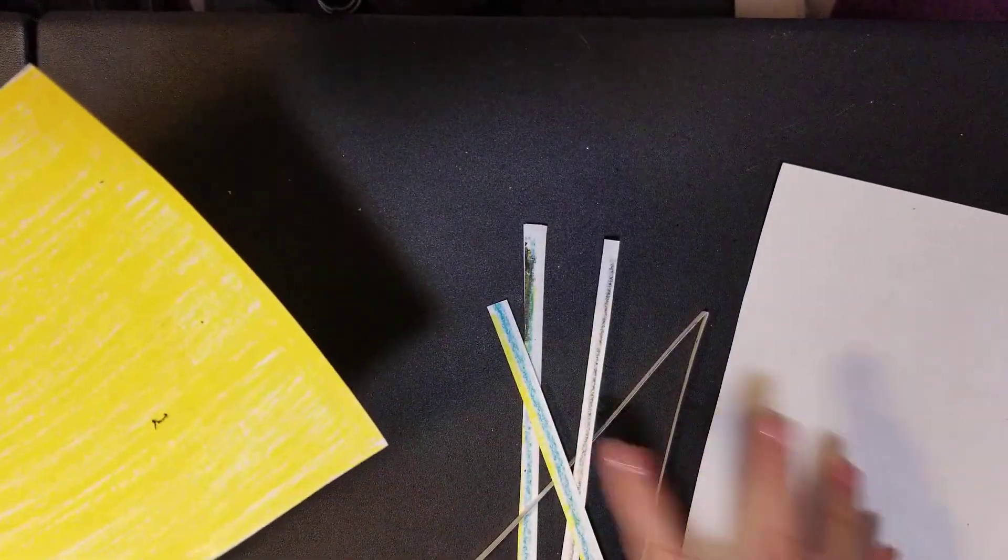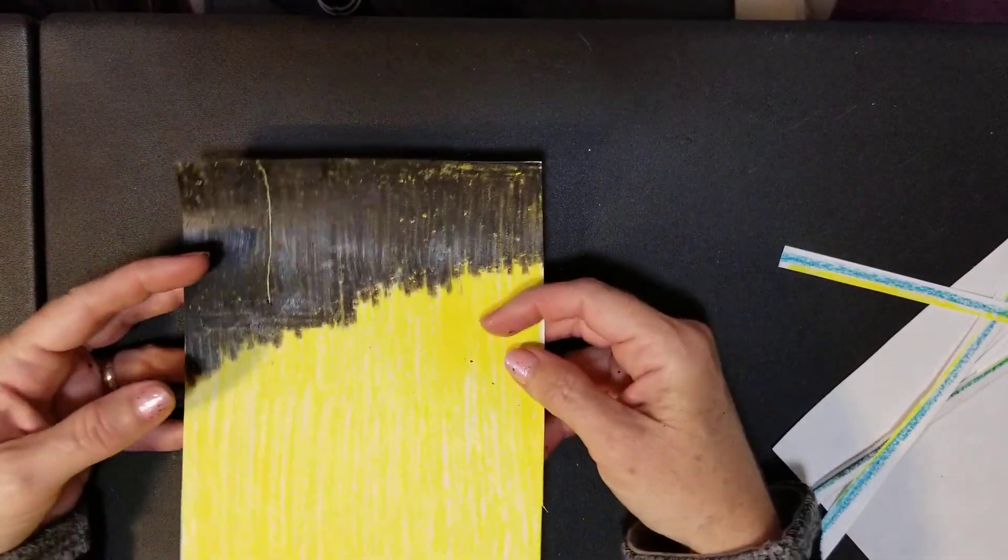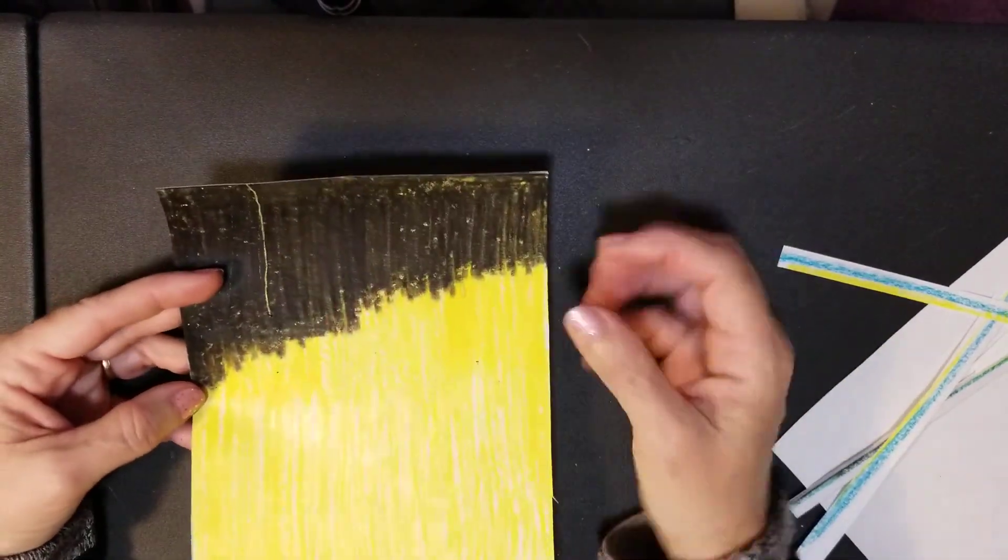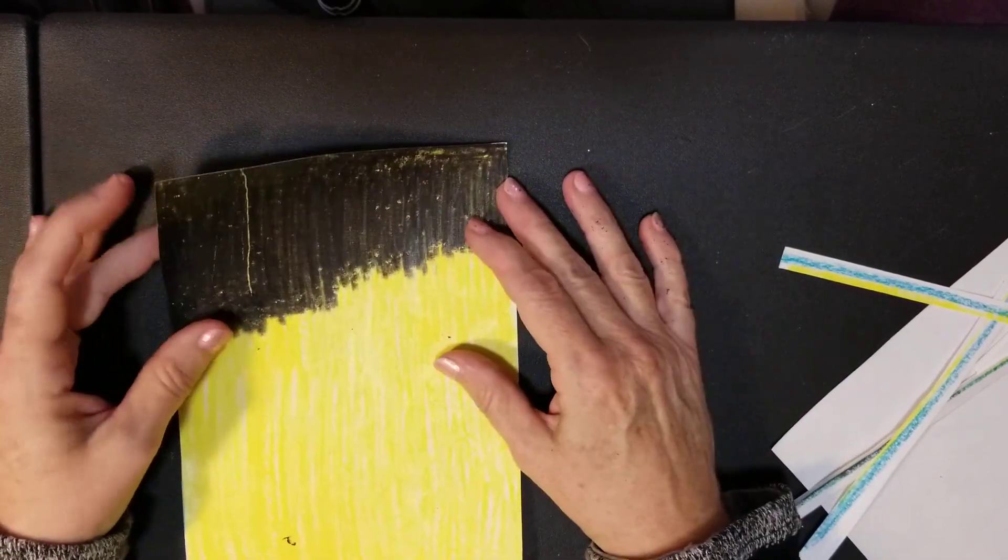This would be just black then. See how this is curling somewhat? That may happen to you when you're coloring because putting a couple layers of crayon tends to curl your paper.